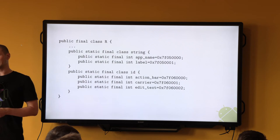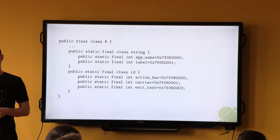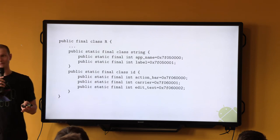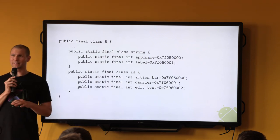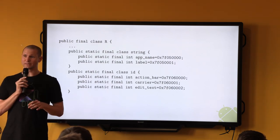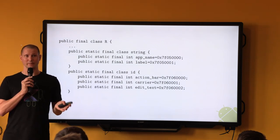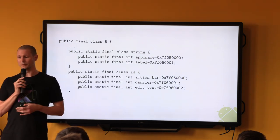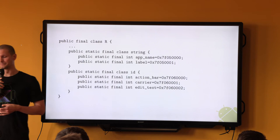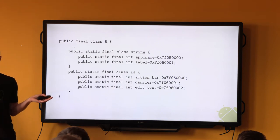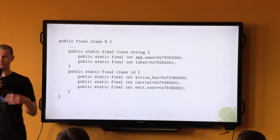The simple answer is that the framework simply cheats. There's a file in the framework called public.xml which enumerates the types and names of the public resources and maps them to their numerical values. Of course, the private resources of the framework still change resource numbers between SDK versions.